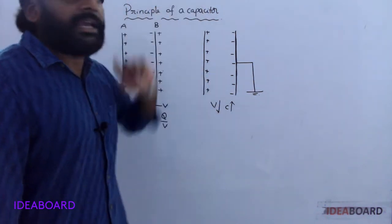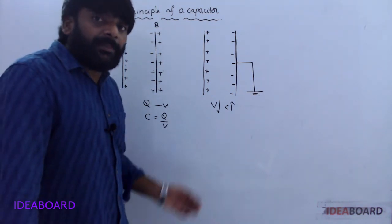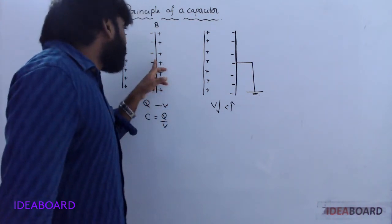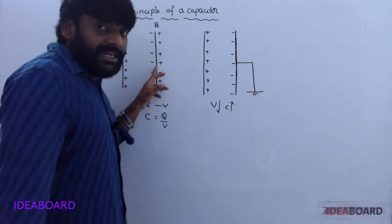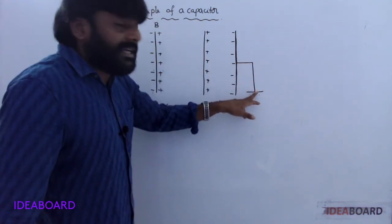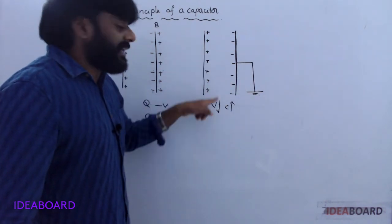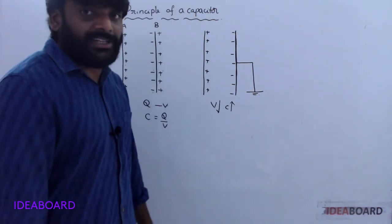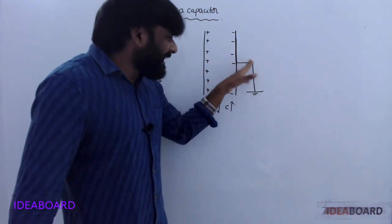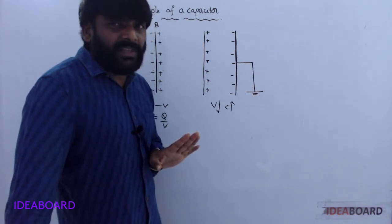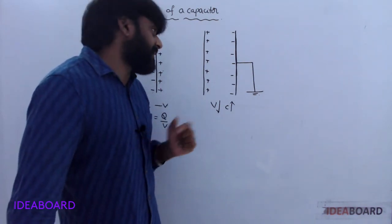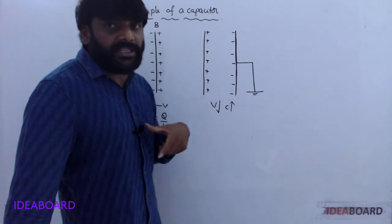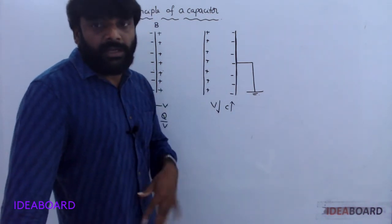So this is the principle of a capacitor: to increase the capacitance of a conductor, bring an uncharged conductor nearer to the charged conductor and ground the other side. Due to this process, its capacitance increases. The most important point is that the induced charge on the conductor is equal in magnitude but opposite in nature to the original charge.